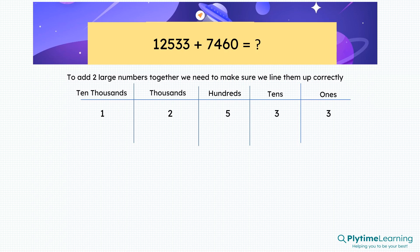Add the first number, and then make sure that we line up the second number starting in the ones column. So the zero goes underneath the three.